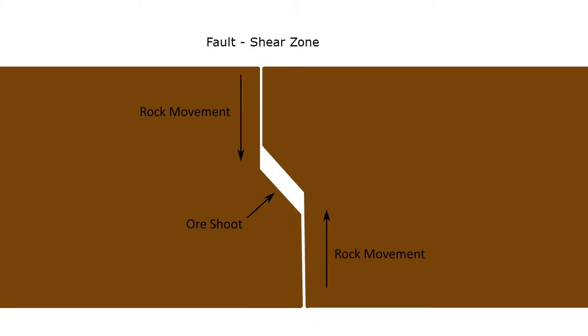Large veining can occur in the voids created by the movement of rock in the opposite direction on either side of a fault in the vicinity of a flexure. These voids are known as ore shoots.